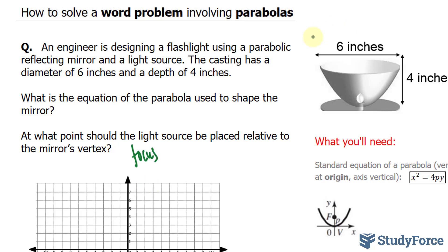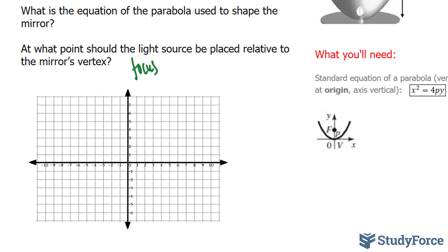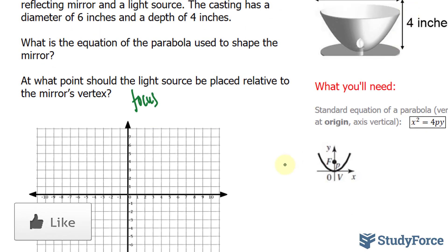So the design looks like this and if you take a cross section of this design, you'll have a parabola where at the 4 inch mark or 4 units up, it's 3 units wide because 6 divided by 2 is equal to 3.